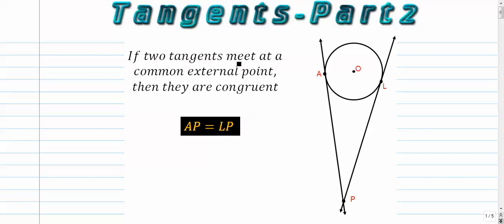In our previous tangent video, we talked a little bit about how the tangent always forms a right angle with the radius, as long as they come together at the point of tangency.